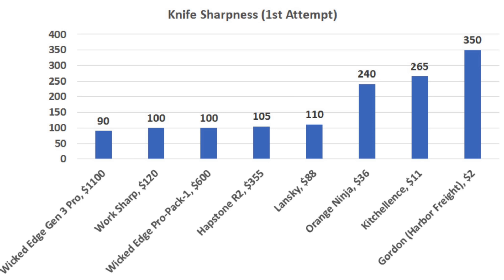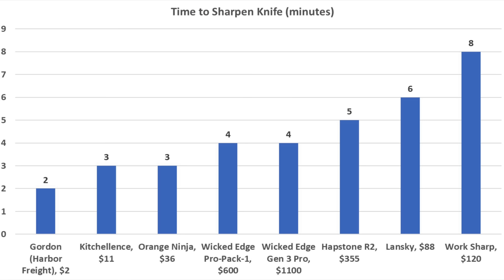When it comes to initial sharpness, the Wicked Edge Gen 3 Pro came out on top with a sharpness score of 90. However, the WorkSharp and the Wicked Edge Pro 1 were just about as sharp with a score of 100 and Hapstone 105. The amount of time it takes to sharpen a knife can vary significantly from person to person. From my experience, the pull-through knives were definitely a lot faster than the guided rod systems.